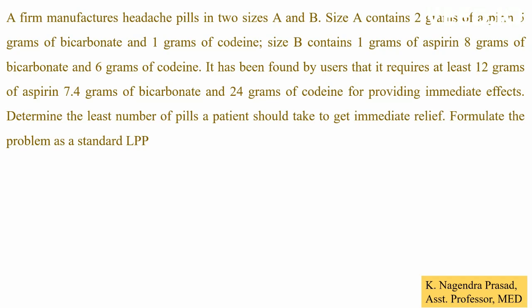A firm manufactures headache pills in two sizes, A and B. Size A contains 2 grams of aspirin, 5 grams of bicarbonate and 1 gram of codium. Size B contains 1 gram of aspirin, 8 grams of bicarbonate and 6 grams of codium. It has been found by users that it requires at least 12 grams of aspirin, 7.4 grams of bicarbonate and 24 grams of codium for providing immediate effects. Determine the least number of pills a patient should take to get immediate relief.